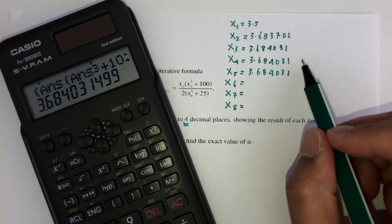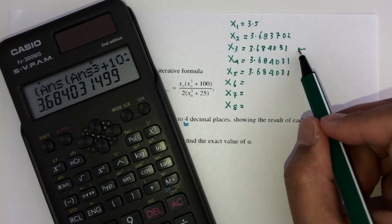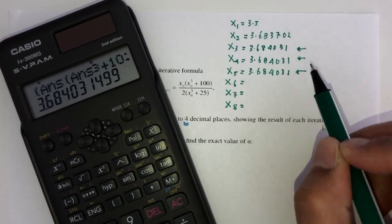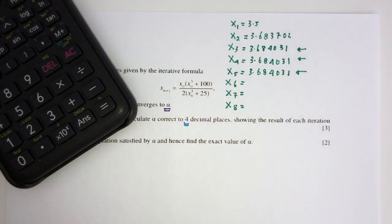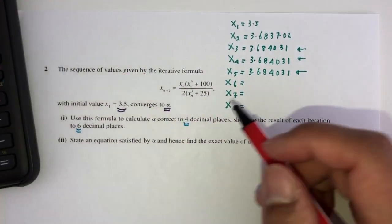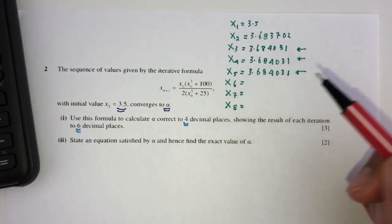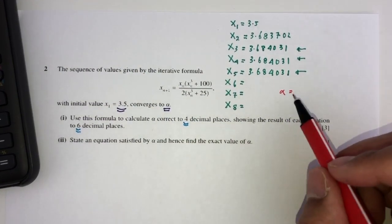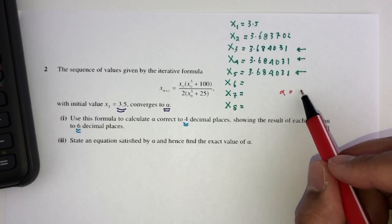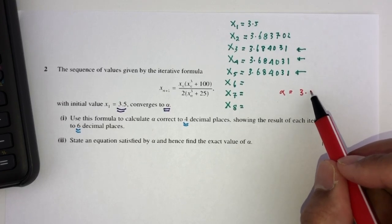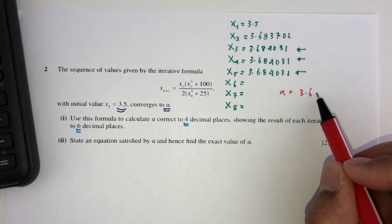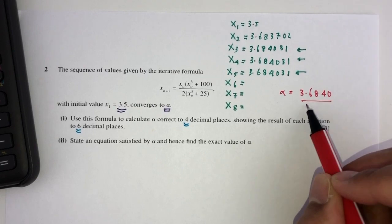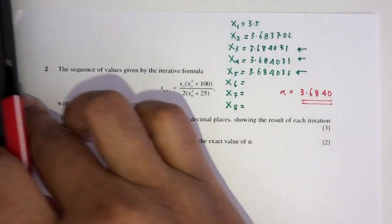It seems to converge at this value, so we can stop here. From this, we can see clearly that the value of alpha, to 4 decimal places, is 3.6840.